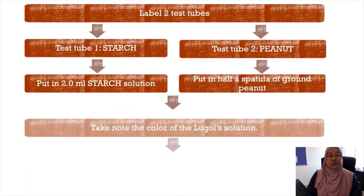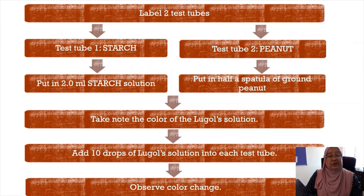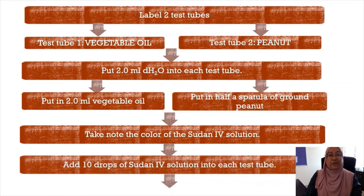This procedure is carried out to determine the presence of polysaccharide. Label two test tubes: test tube one for starch, test tube two for peanut. In test tube one, put in 2 ml of starch solution; in test tube two, put in half a spatula of ground peanut. Take note of the color of the Lugol's solution, then add 10 drops of Lugol's solution into each test tube and observe any color changes.